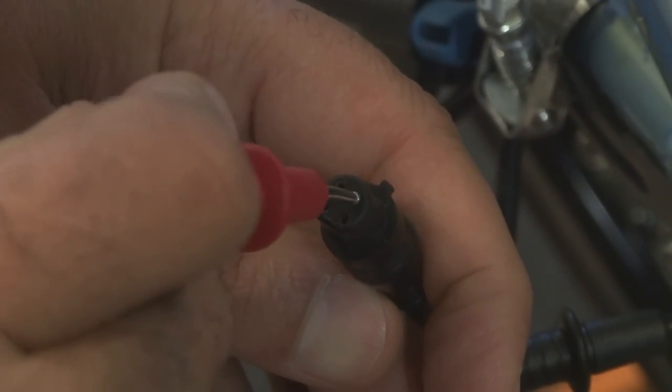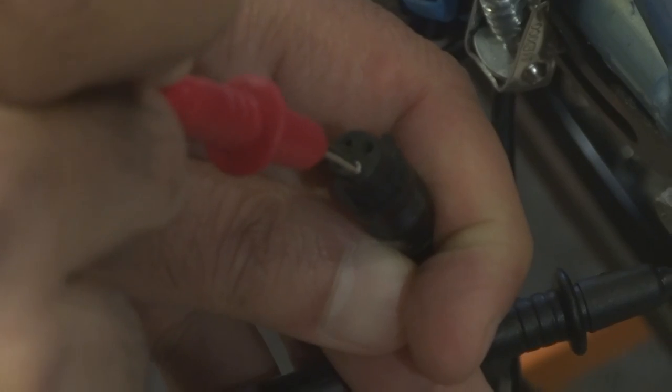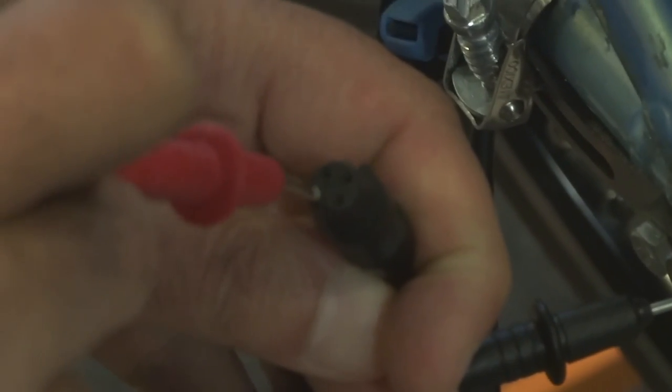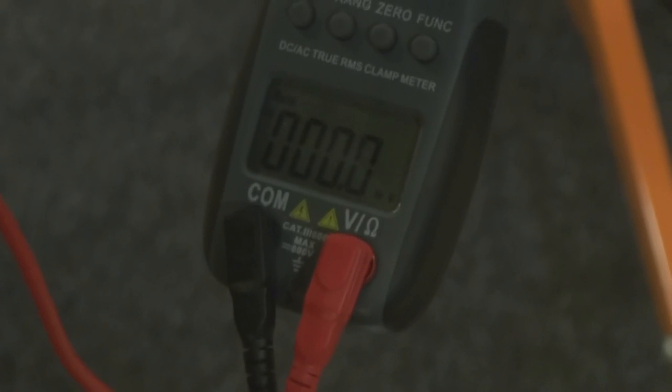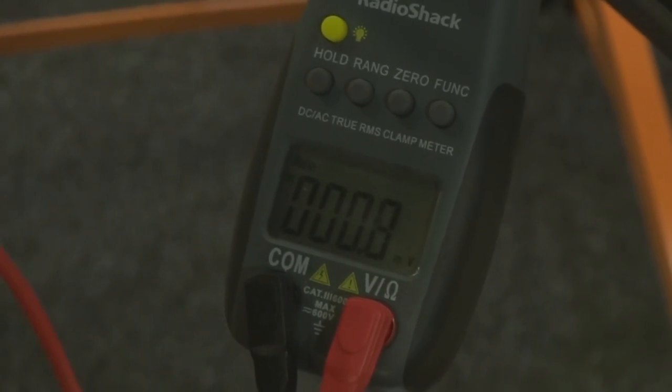So here we are supposed to get 5 volt here and we do with the battery on. This one we're supposed to get 0 and we do. This one is supposed to get 5 volt and we don't. And this one is supposed to get 5 volts and we do.